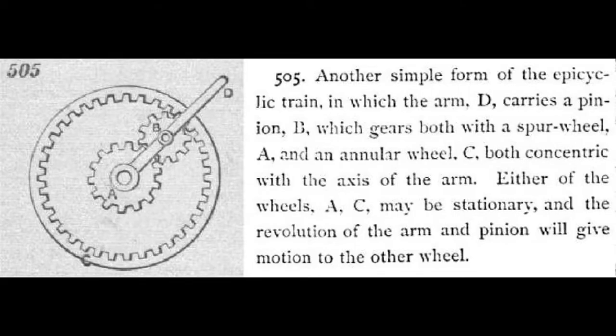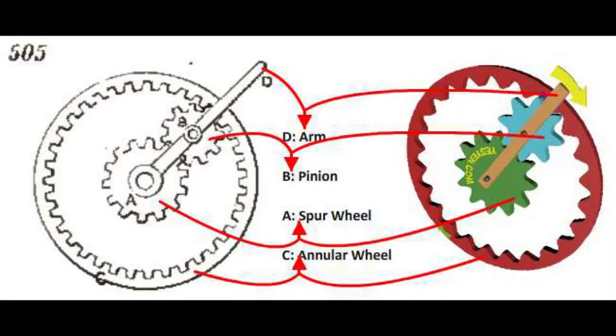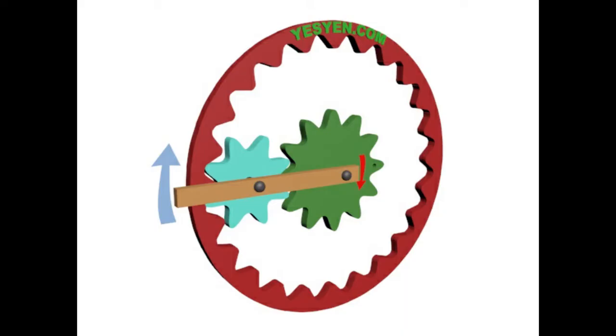As shown in the figure, this gear train has an arm, a pinion also known as spanner gear, a spur wheel also known as sun gear, and an annular wheel which is an internal gear. The primary input rotation is given to the arm which is pivoted at the centre.